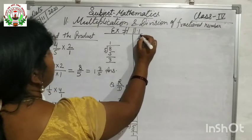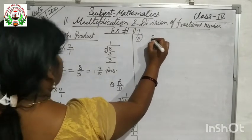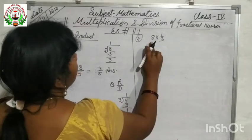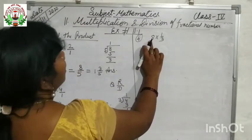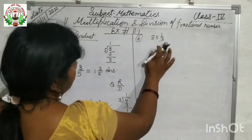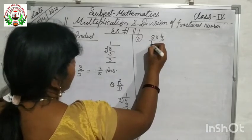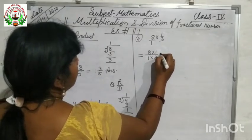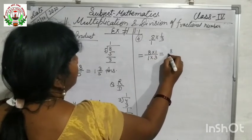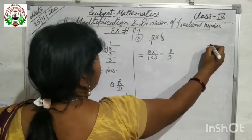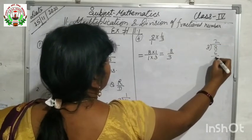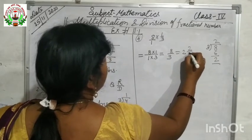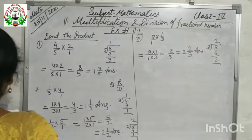Question number 4 is 8 into 1/3. Here 8 is a whole number given first, so we write it as 8/1. Multiply numerator with numerator and denominator with denominator: 8 into 1 is 8, 3 into 1 is 3, giving 8/3. Dividing: 3 goes twice giving 6, remainder 8 minus 6 is 2. So the answer is 2 and 2/3.